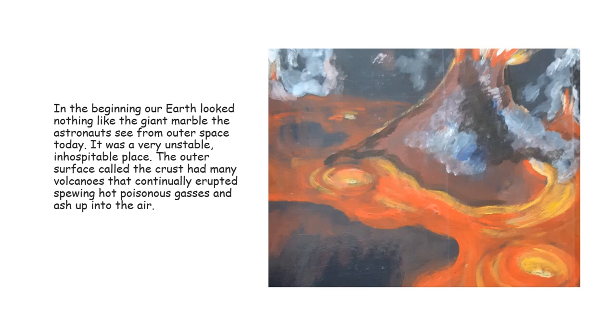In the beginning, our Earth looked nothing like the giant marvel that astronauts see from outer space today. It was a very unstable, inhospitable place. The outer surface, called the crust, had many volcanoes that continually erupted, spewing hot, poisonous gases and ash up into the air.